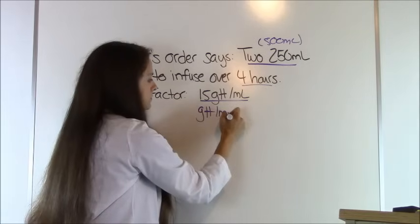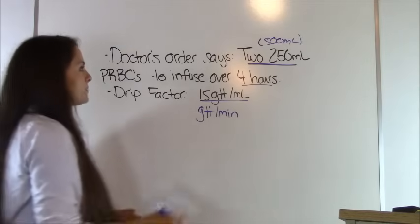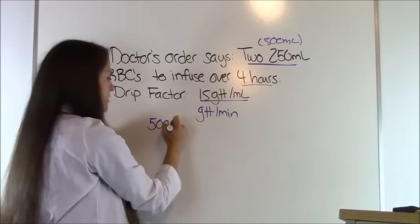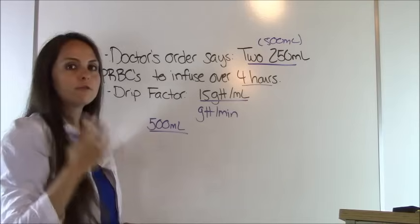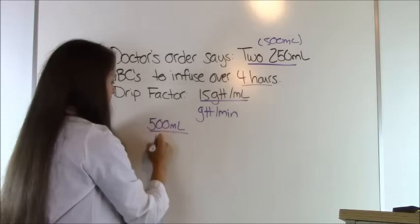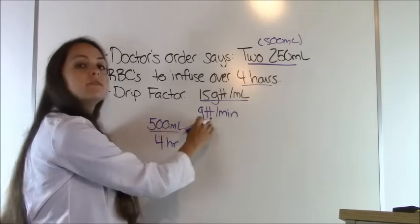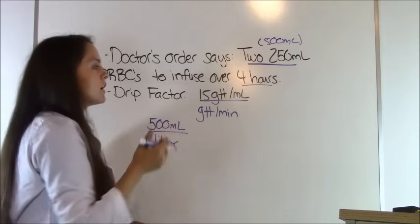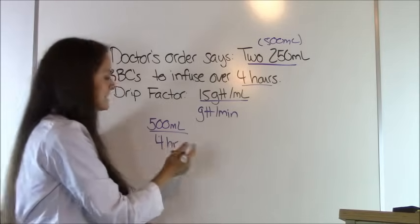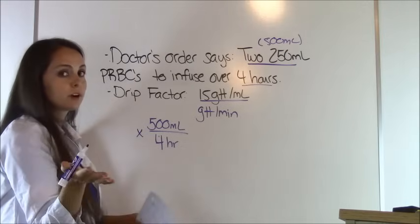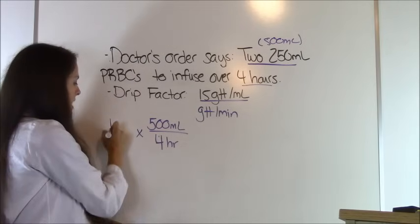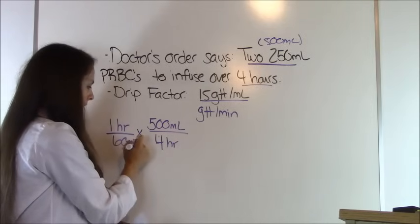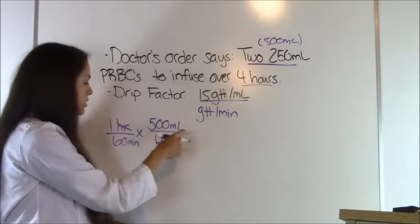Starting with what the doctor ordered: 500 milliliters — because 250 plus 250 is 500 — over 4 hours. We need to get to drops per minute, so we've got a lot of converting to do. First, convert hours to minutes: 1 hour equals 60 minutes, and that cancels out hours. Right now we have milliliters per minute, but we're trying to get to drops per minute.